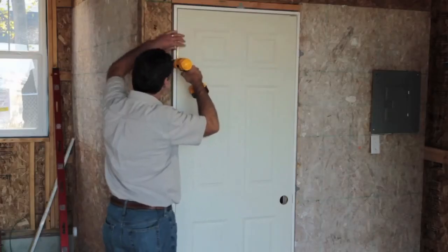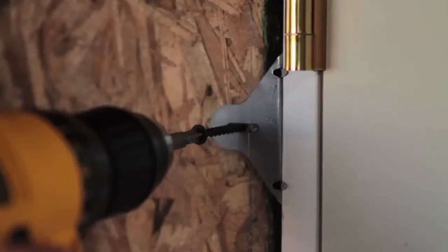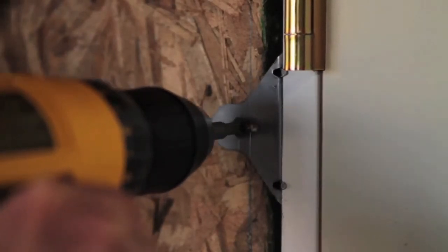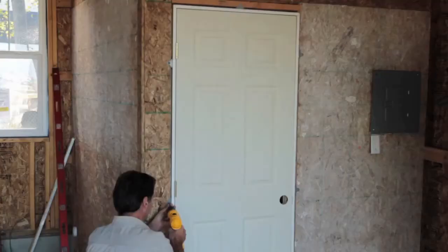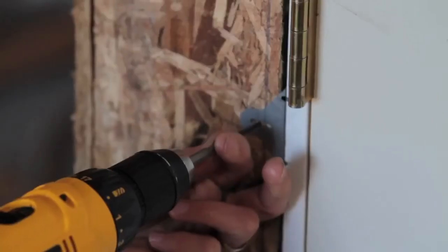After your door's in the hole, start by screwing the top bracket on the hinge side into the wall first. Pick a line, move it over, and attach that top bracket first.